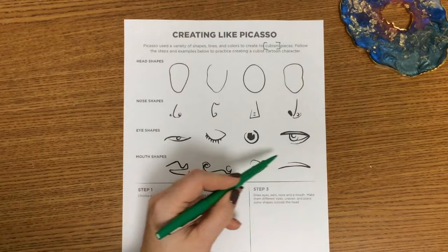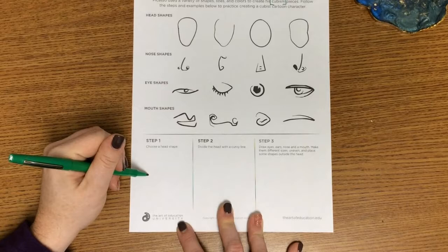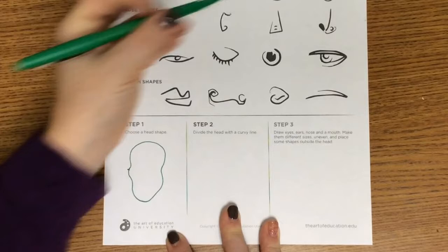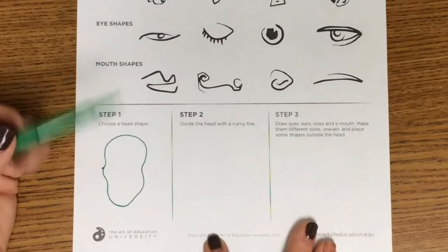We're going to follow the steps and examples and practice making our own cubist cartoon character. You can see all the different types of head shapes, eyes, nose, mouth shapes, etc. In step one, draw any type of shape for a head — you can copy one you see or create your own wobbly, wiggly version. Step two says to divide the head with a curvy line. You could redraw it, or I'm just going to draw a curvy line on my head shape.